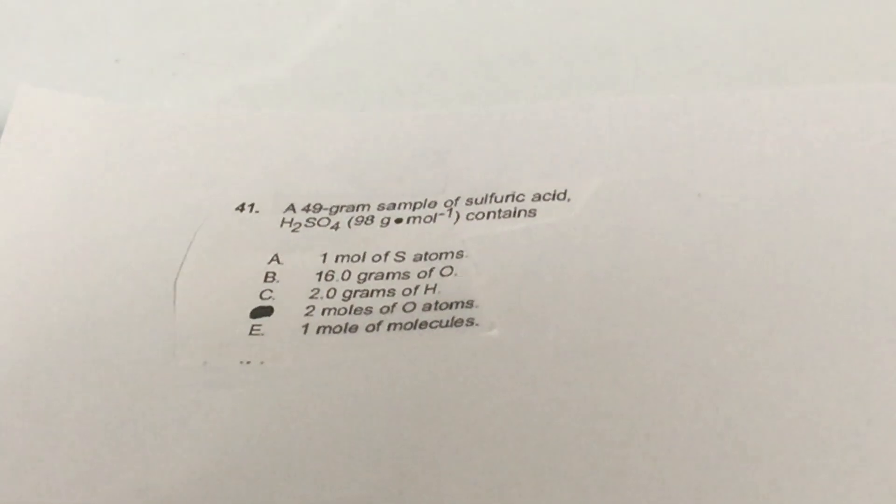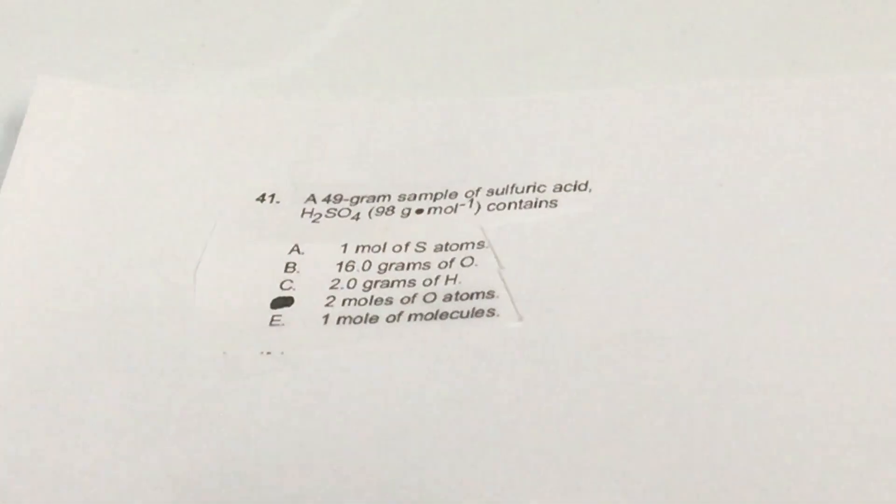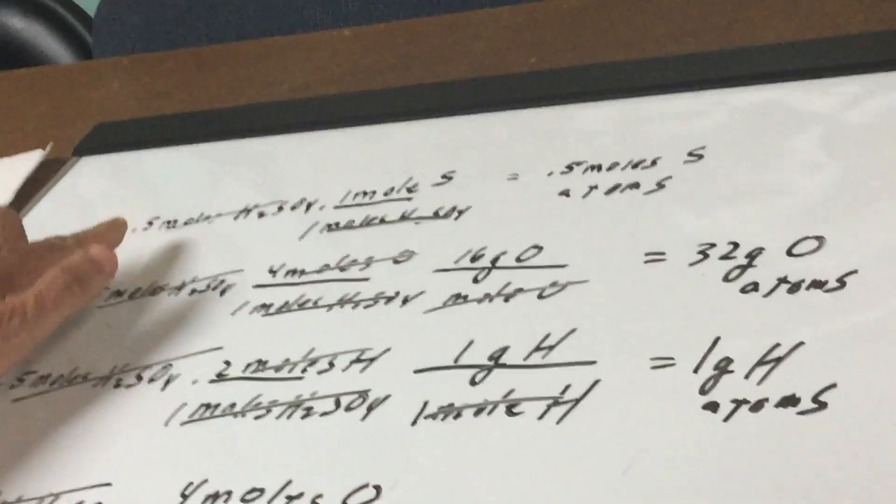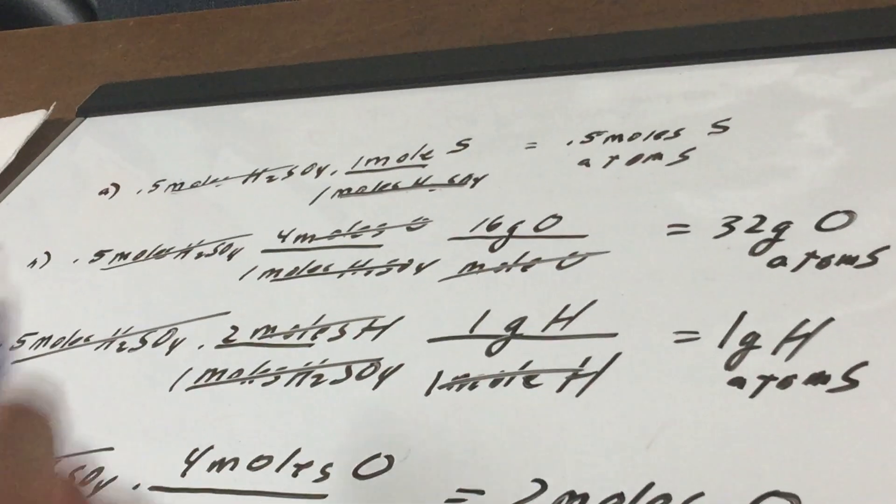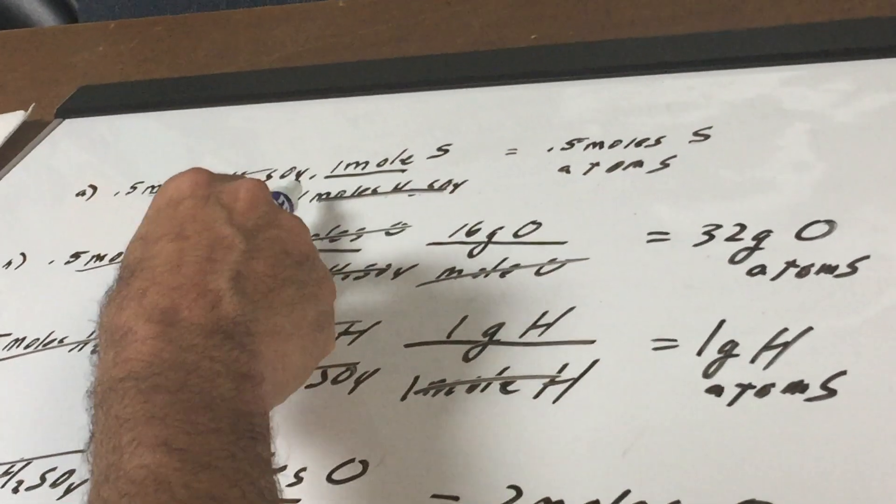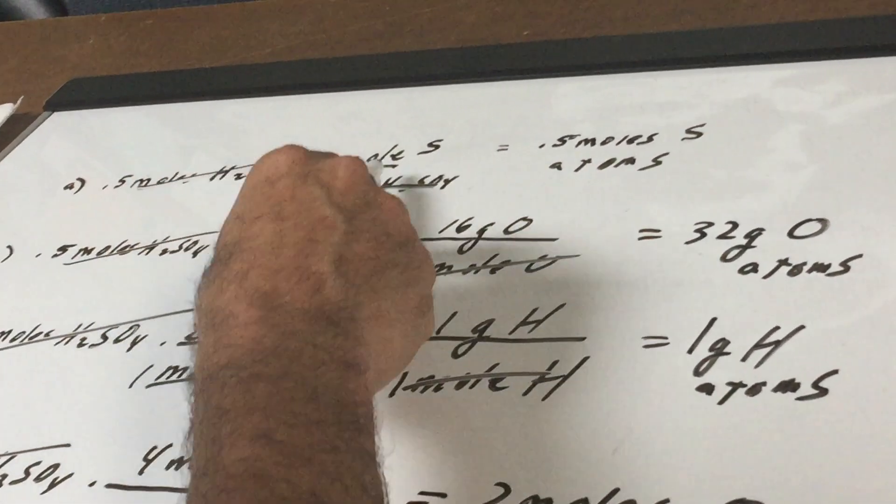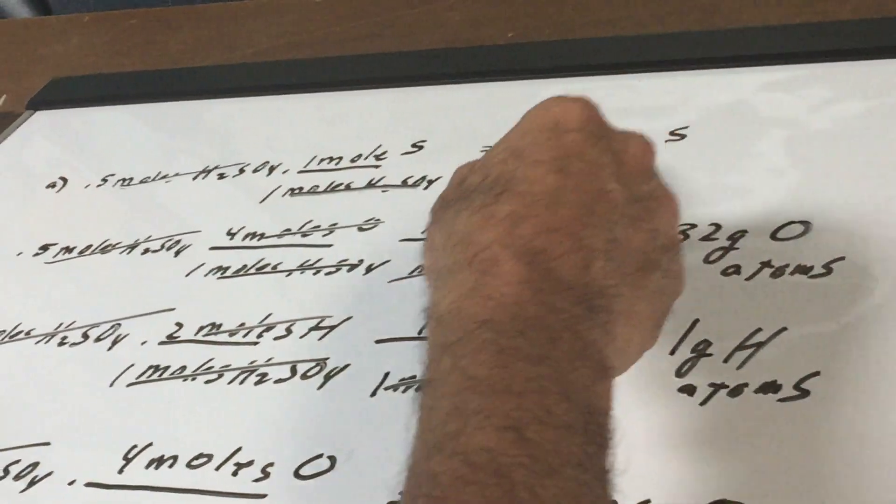It says choice A we have one mole of sulfur atoms. As you can see what I've done here and I wrote this out to save some time. I wrote down the given. We have a half a mole of H2SO4. There is one mole of sulfur in one mole of the H2SO4. So that cancels out and we're left with the moles of sulfur atoms. And notice we get a half. Choice A says one mole. So that's wrong. It's a half a mole.